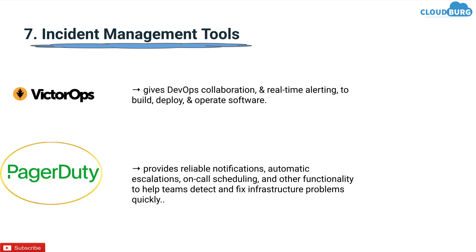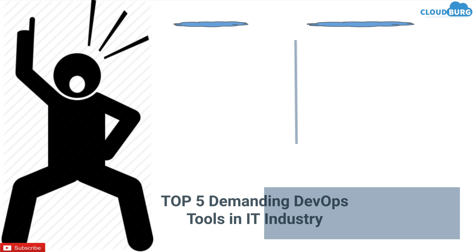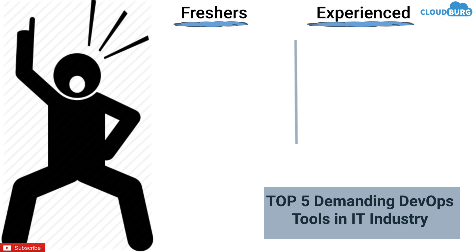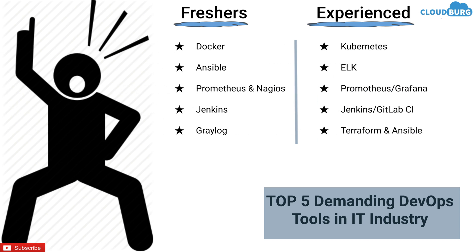Now let's enter into the next and last topic of today's talk, which is the top 5 demanding tools. I have categorized them in two parts: one for freshers and one for experienced engineers, based on expectations from an employer's point of view. A fresher can learn tools like Docker, Ansible, Prometheus or Nagios, Jenkins, and Graylog. An experienced engineer can learn tools like Kubernetes, ELK stack, Prometheus, Grafana, Jenkins or GitLab CI, and Terraform or Ansible, considering that they are already aware of the tools in the fresher category.